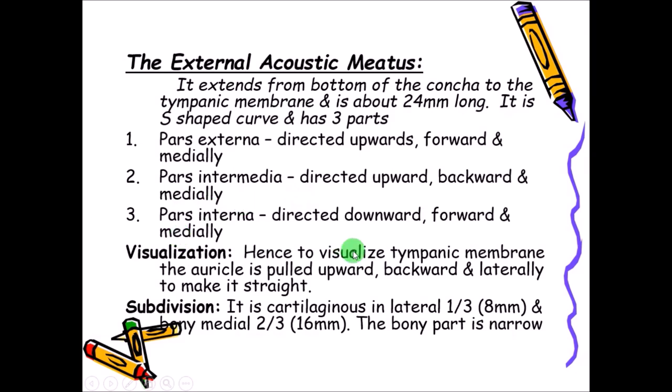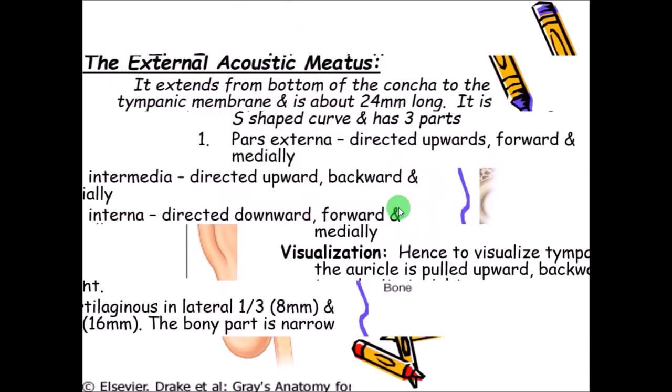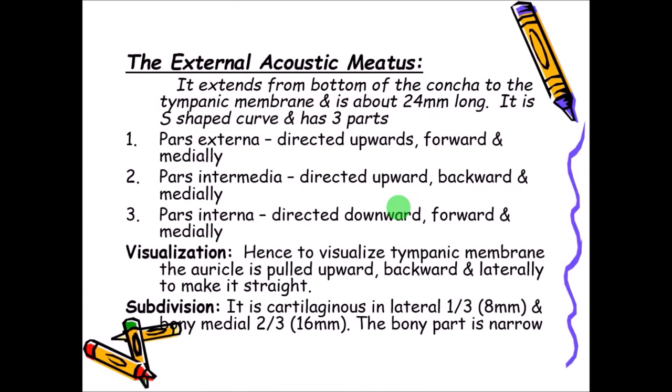To visualize the tympanic membrane, you have to pull the pinna upwards, backwards, and laterally to straighten the tube. Once the external acoustic meatus is straight, you can see the tympanic membrane. This clearly indicates that it is not a straight tube but S-shaped.